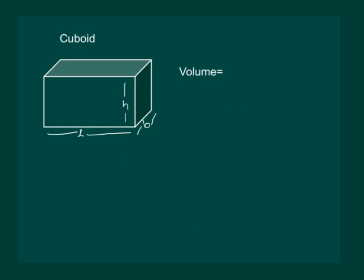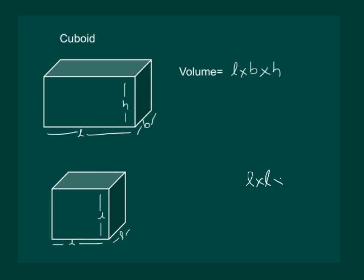Volume of a cuboid is length into breadth into height. Volume of a cube is length into length into length which is equal to length cube.